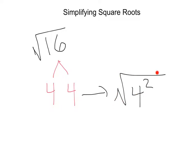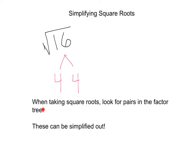Now since we have a square root and a square, since those are opposites, our output, the number that we're going to be left with is just 4, which is what we've done before. The key difference here, the point that I want you to get from this is, when taking square roots, look for pairs in the factor tree, just like this pair of 4s we found here.